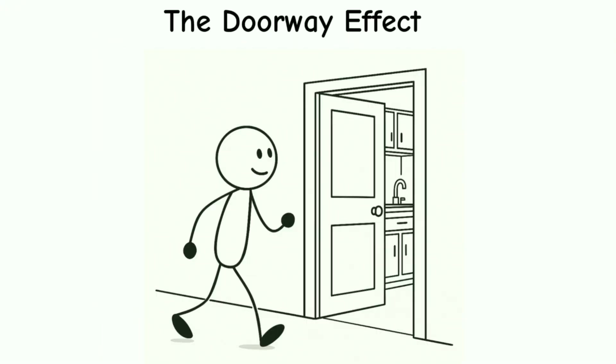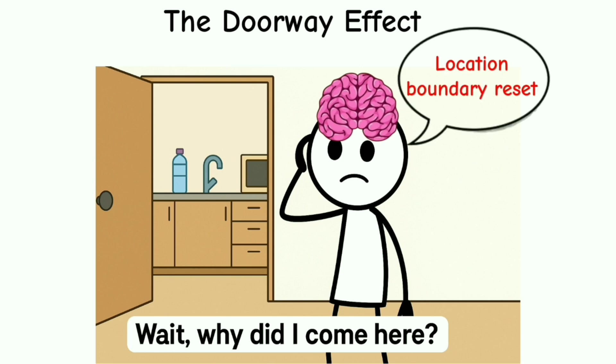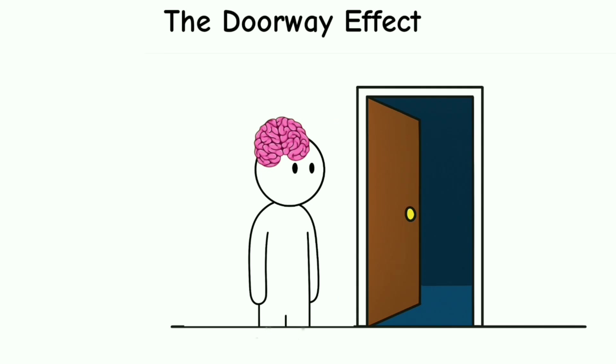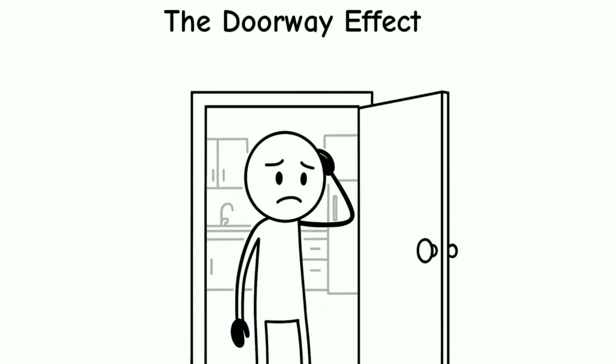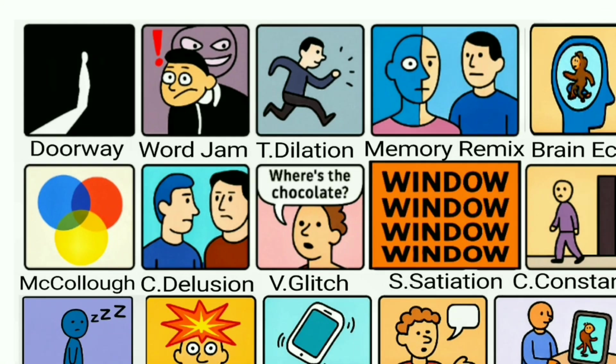The doorway effect: you walk into the kitchen and suddenly stop. Wait, why did you even come here? This is a real brain glitch scientists call it a location boundary reset. Basically, your brain treats entering a new room like opening a new tab in your mind. The task you had in the previous room is gone—not deleted, just buried under new information. It's like going into a new level in a game and your old mission just disappears.